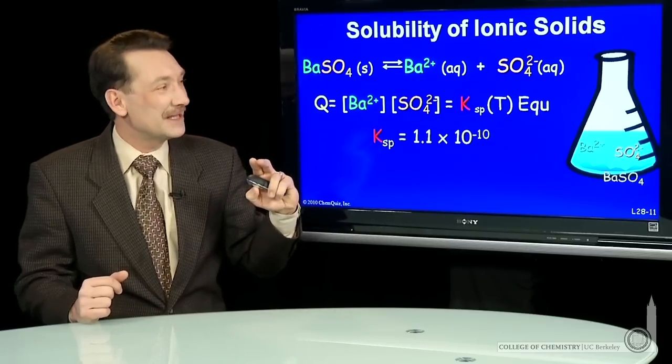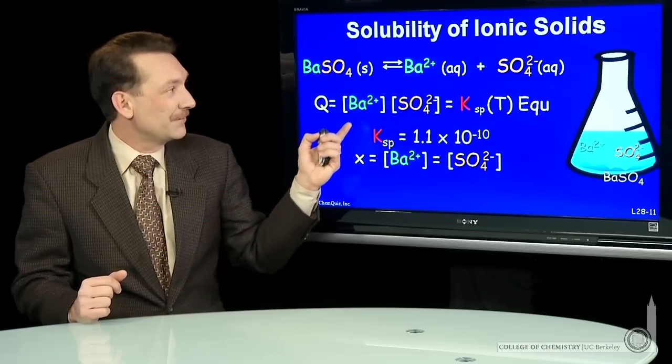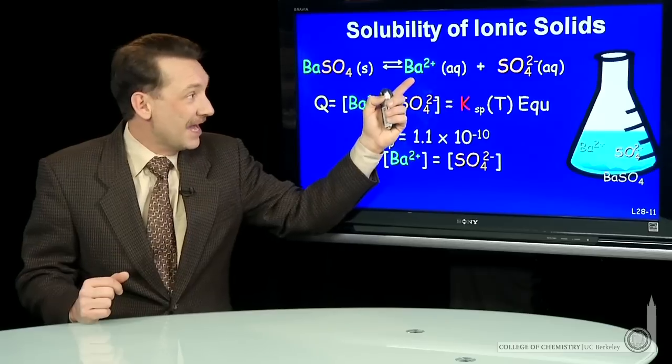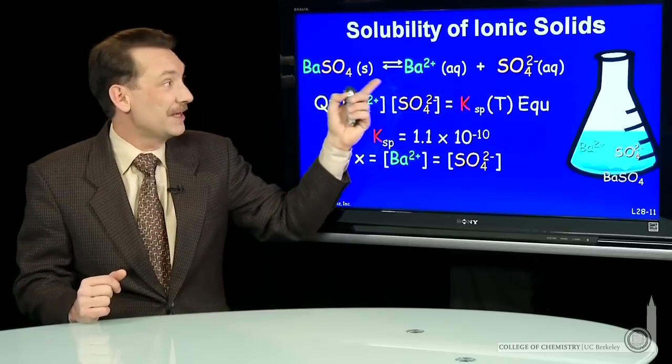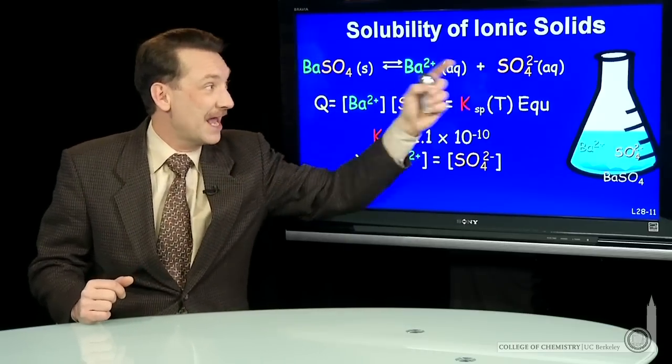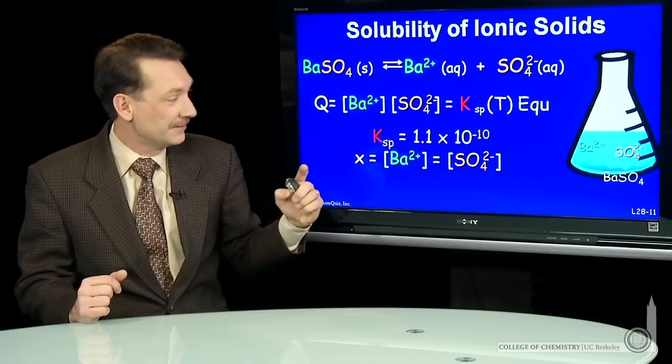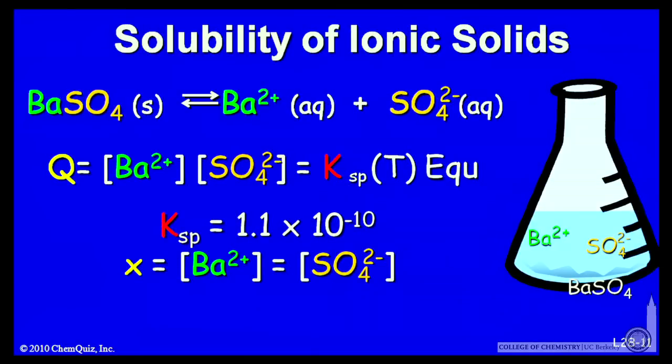So with a small Ksp, what is the solubility of barium sulfate? Well, you can say if x moles dissolves, that will form x moles of barium and x moles of sulfate. So if the concentration of the barium ions is x moles per liter, the concentration of the sulfate ions is x moles per liter.